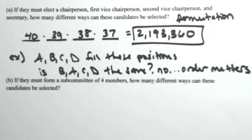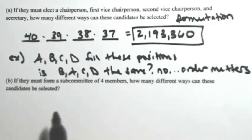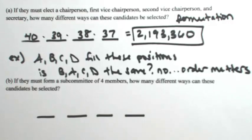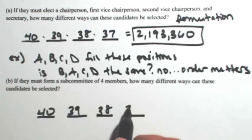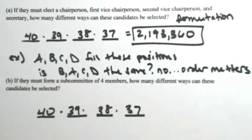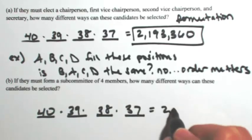Part B, same idea, but this time we're just forming a subcommittee of four members. So they don't have a specific position that they've been given. We're just putting four people together to make a committee. So with that being the case, how many different ways can these candidates be selected? So still we have four people. There's still 40 people to pick from for the first one, and then 39, then 38, then 37. So everything starts out the same way. So you start out with a permutation.